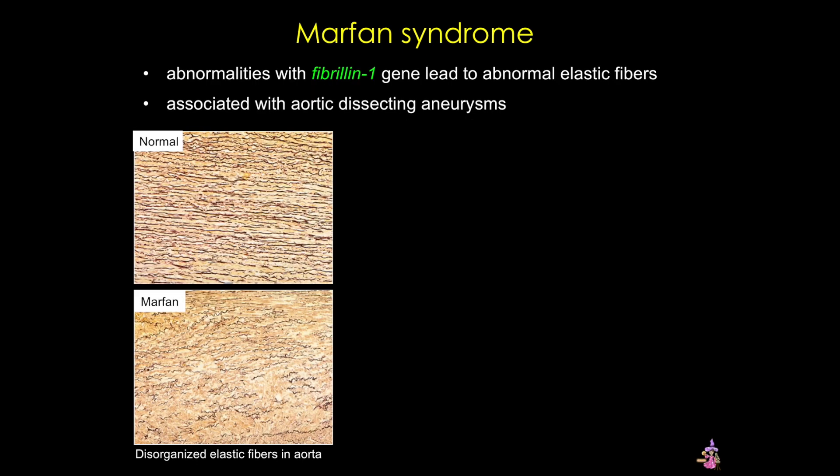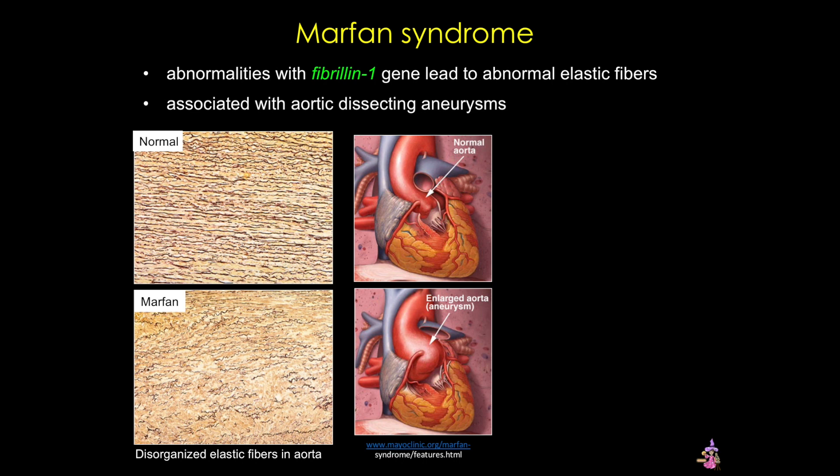Another disease that predominantly affects elastic arteries is Marfan syndrome. This disease, caused by mutations in the fibrillin-1 gene, leads to abnormal elastic fibers. Here you can see a comparison of the tunica media in a normal aorta versus a Marfan syndrome patient's aorta. This large disruption of the largest tunic weakens the vessel, and thus Marfan's patients are at high risk of aortic dissecting aneurysms.